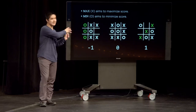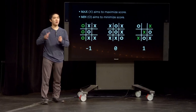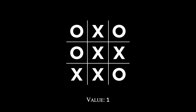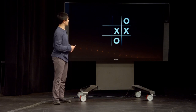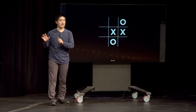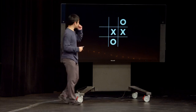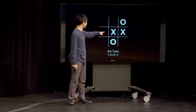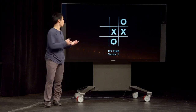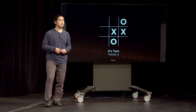We can take every board in tic-tac-toe and assign a score to it — either 1, 0, or negative 1. For a board where X has already won, we give it a value of 1. For a board that isn't over yet — let's assume it's X's turn — we assign a score by considering what would happen if both players were playing optimally. If X is playing the best possible move, X is going to play in the winning square to get three in a row, so this board also has a value of 1.